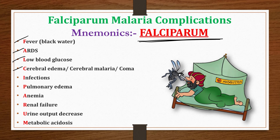C stands for cerebral edema, cerebral malaria, or coma. I stands for infections. P stands for pulmonary edema. A stands for anemia. R stands for renal failure. U stands for decreased urine output. M stands for metabolic acidosis.